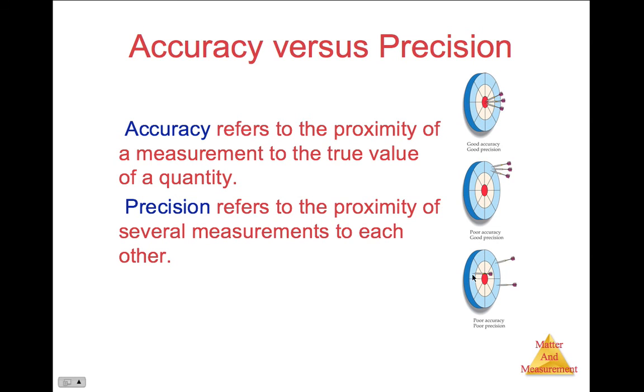And thirdly, let's say we threw three darts, and none of them came close to the bullseye, and they were all spread far apart. We'd say that that's poor accuracy and also poorly precise.